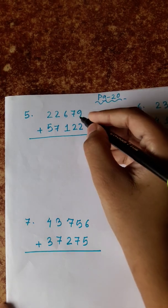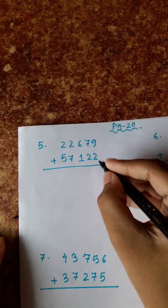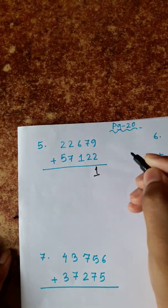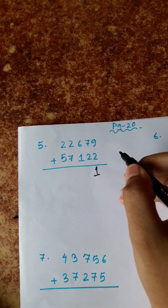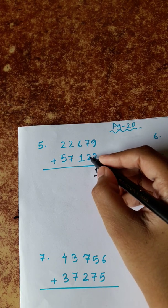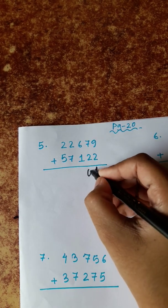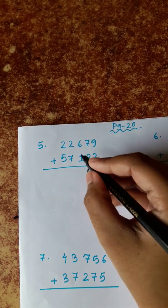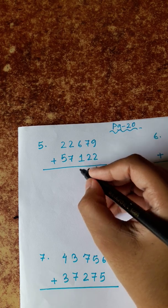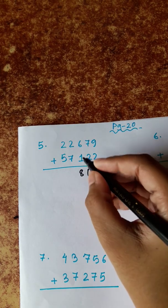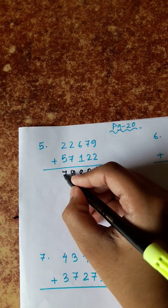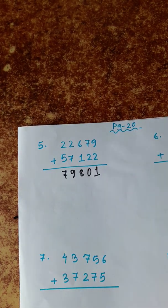Then 9 plus 2 is 11 — that is 1 remainder 1. Then 2 and 1 is 3. 7 plus 3 is 10 — that is 0 remainder 1. Then 1 plus 1 is 2. 6 plus 2 is 8. 7 plus 2 is 9. 5 plus 2 is 7.